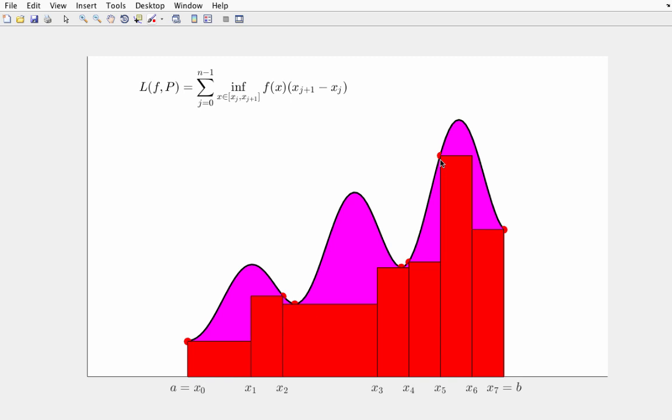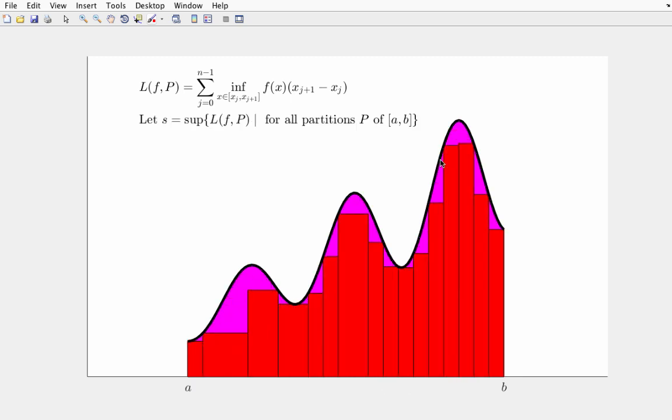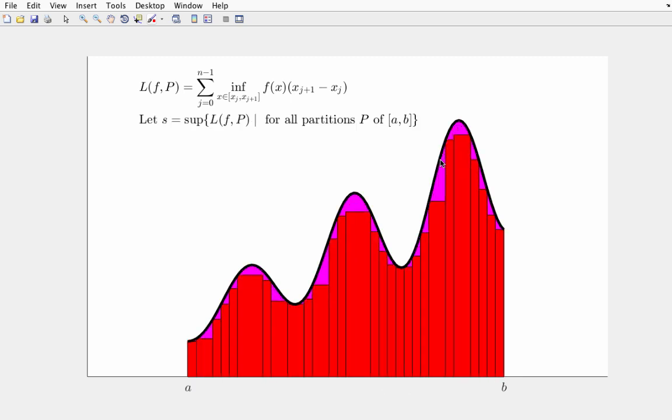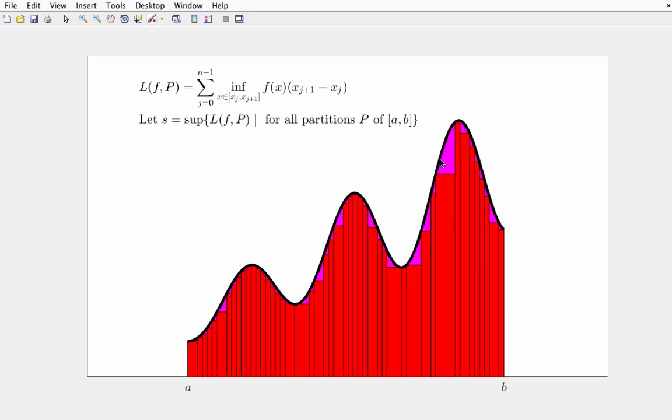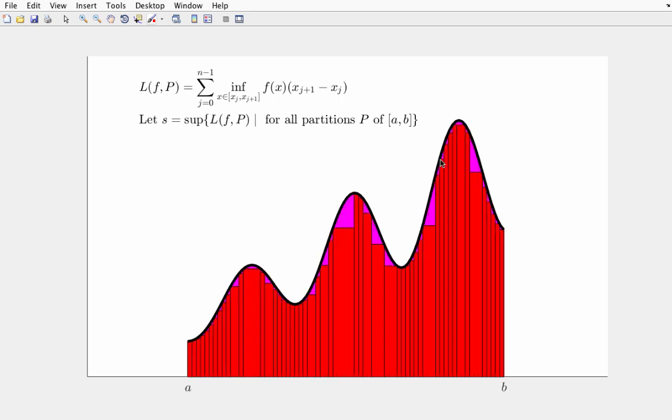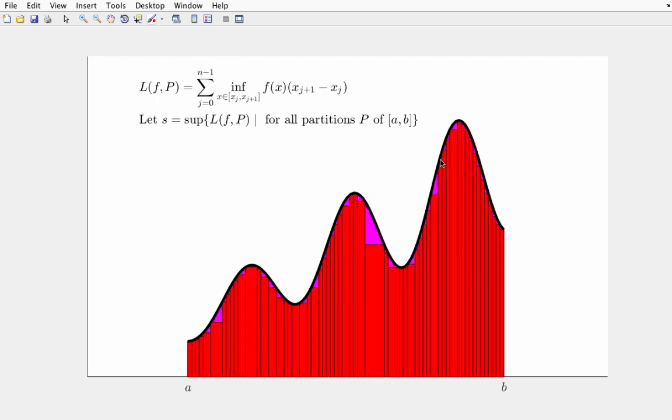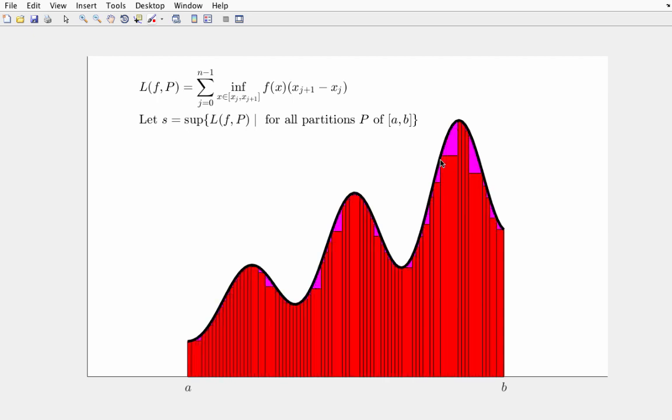Now, for this particular partition, the lower sum is not a good idea of what the actual area under the curve is. But, imagine, of all possible lower sums, I took the biggest one, or to be more general, the supremum, that is the least upper bound of all upper bounds of lower sums.